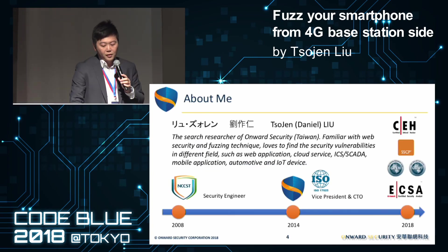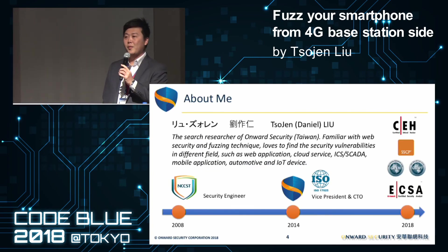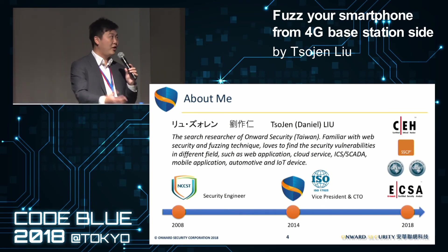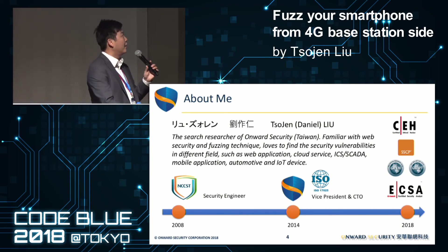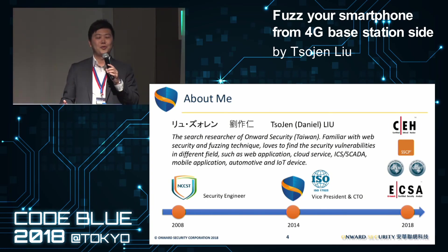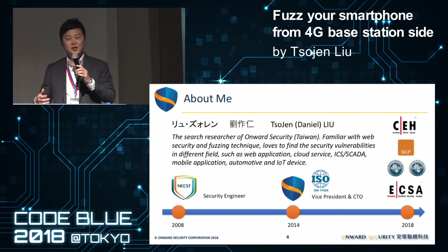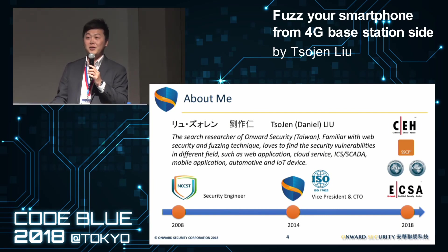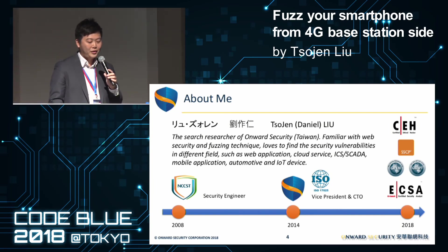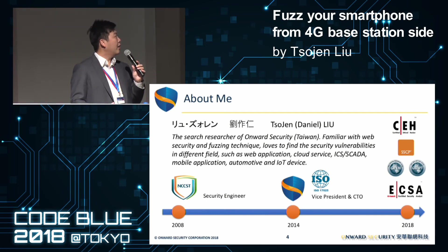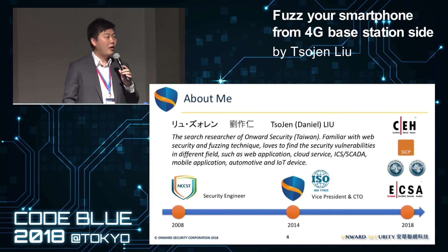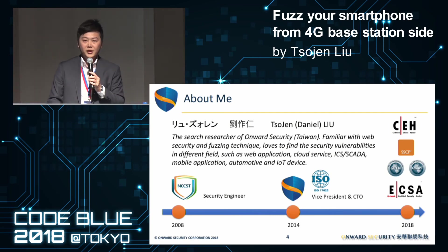Let me introduce myself first. I come from Taiwan, and my Chinese name is hard to pronounce, but you can just call me Daniel — it's much easier to remember and say. I have ten years of experience in security testing, and we founded our security company in 2014.